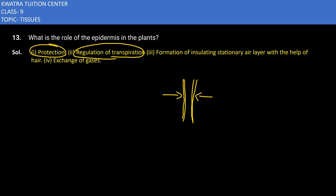The third part is the formation of an insulating stationary air layer. With the help of hair from the epidermis, a stationary insulating air layer is created around the plant, which helps to protect the plant.